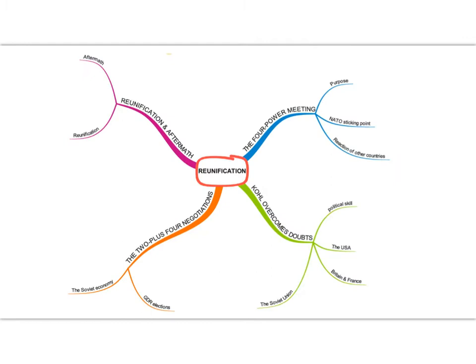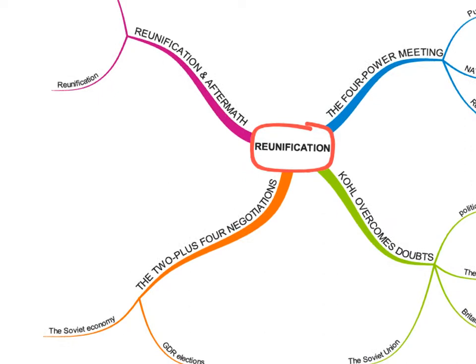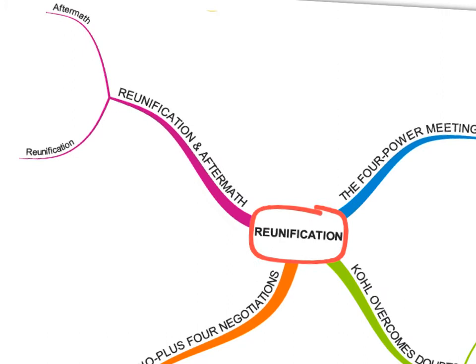There's our mind map for today's lesson. The four power meeting is the first strand, then we'll move into Kohl overcoming doubts, then the two-plus-four negotiations, and then the reunification that happened in October 1990 and its aftermath.